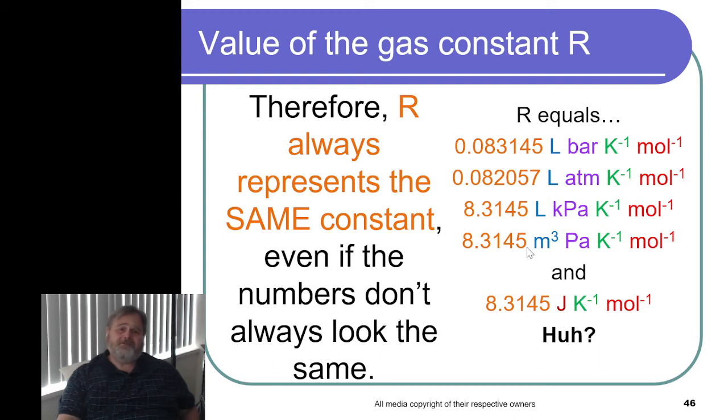And so those 2,000s kind of work together to give us the same number here. And you'll notice the same value here, because we're again in metric units. When we're in the imperial units, that's when this number changes.